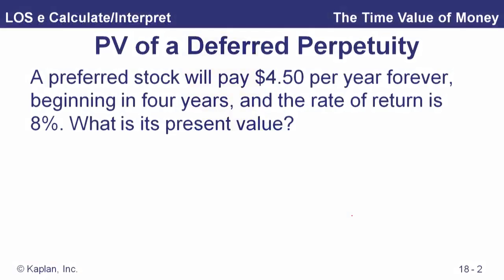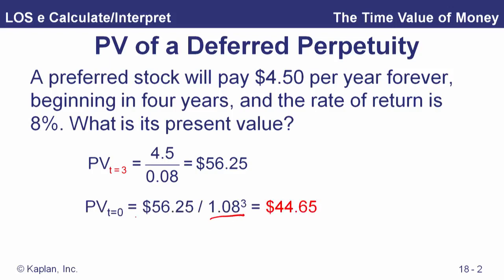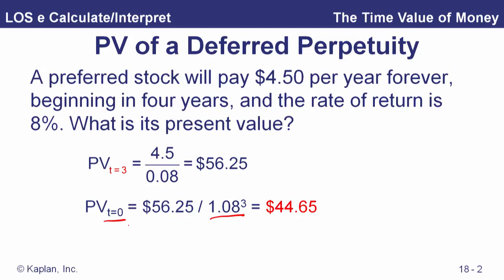What about a deferred perpetuity? We use the same solution technique, but now we use the formula to get the value one period before the first dividend payment, and then discount that back to the present. We plug in the dividend and the discount rate to get $56.25. But that first payment comes four years from today, so that value we just calculated is a time three value. We discount that at 8% to get a time zero value of $44.64. The interpretation being: if we put $44.64 in the account today and it earned 8% for three years, we'd have $56.25 and then earn interest payments of $4.50 every year forever.